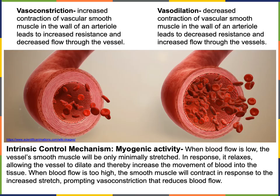Regulation of blood vessel diameter is the primary way blood vessels regulate blood flow and blood pressure. When smooth muscle in the vessel wall contracts, this is called vasoconstriction, which increases resistance and decreases flow rate. In contrast, vasodilation occurs when vascular smooth muscle relaxes, leading to increased diameter, decreased resistance, and increased flow.